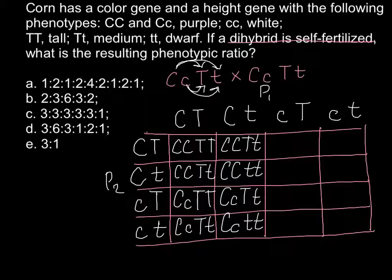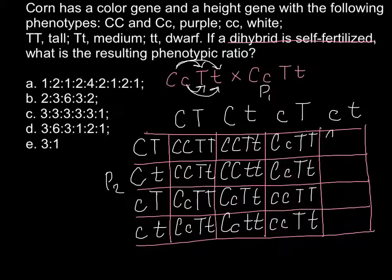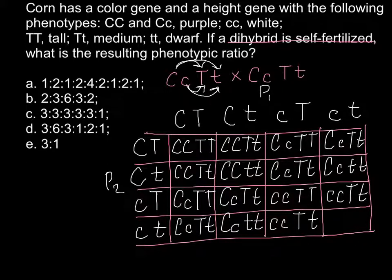Completing the final cells of the Punnett square with the remaining genotype combinations — small c, small c, capital T, small t; and small c, small c, small t, small t — so that all 16 cells are now filled. Now that we know all these genotypes, it is easy to find all the possible phenotypes.